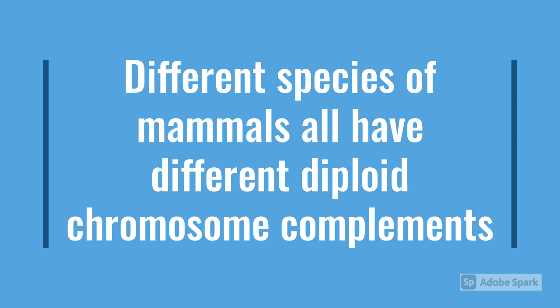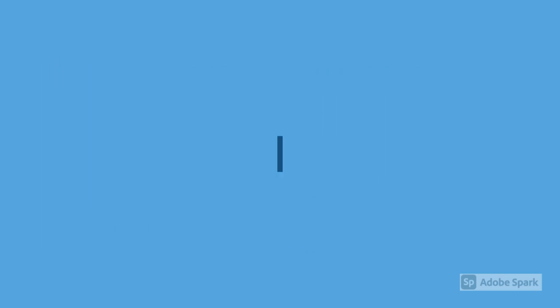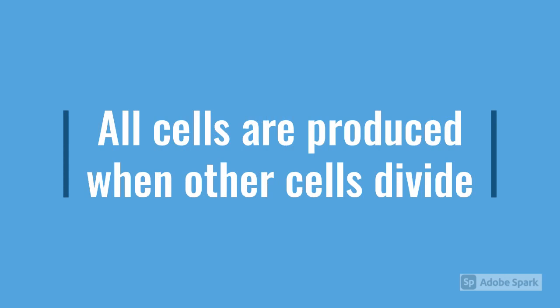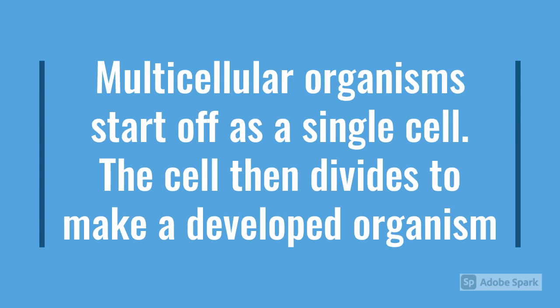How many chromosomes do you think it has in one set? So now we know what a diploid chromosome complement is, we can finally move on to cell division. Have you ever wondered why there are so many cells in your body? That is through cell division. All cells are produced when other cells divide. Multicellular organisms — that is, organisms with a lot of cells, for example humans or cats — start off as just one cell. The cell then divides to make more cells, and those cells divide to make more cells, and on and on until a developed organism is made.